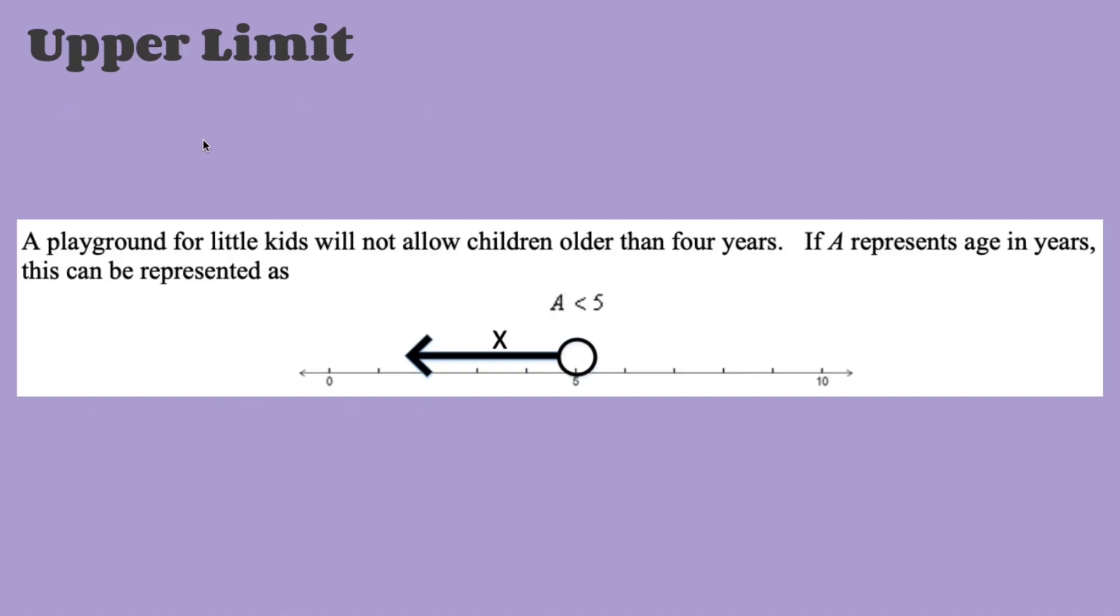First, we have our upper limit. This problem says a playground for little kids will not allow children older than 4 years. If A represents age in years, this can be represented as... This playground won't allow kids that are older than 4 years, so older than 4 years is 5. And we have age, our variable is A, which represents age. So our inequality will be A is less than 5. It could have also been A is greater than 4, but we're going with this because this is an upper limit problem.